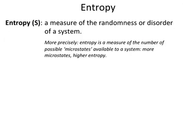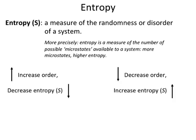So we need a new measure of spontaneity, and we have one — it's called entropy. The simple definition of entropy is disorder, randomness. More disorder is more entropy. To be a little more precise, entropy has to do with microstates, which is just how many possibilities the system has for arrangement. More of those means higher entropy. In general, if you increase the order, you're going to decrease entropy; if you decrease the order, you're going to increase entropy.